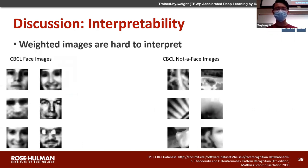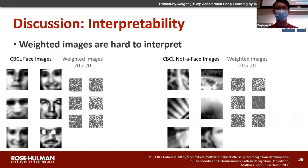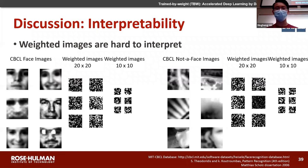You can see the CBCL image dataset with face and non-face images. However, after applying PCA to get a reduced 20 by 20 image, it becomes harder to visualize, and even harder to distinguish between face and non-face images. The same applies to the 10 by 10 reduced image. Therefore, we are exploring possible ways to visualize or interpret the weighted data.